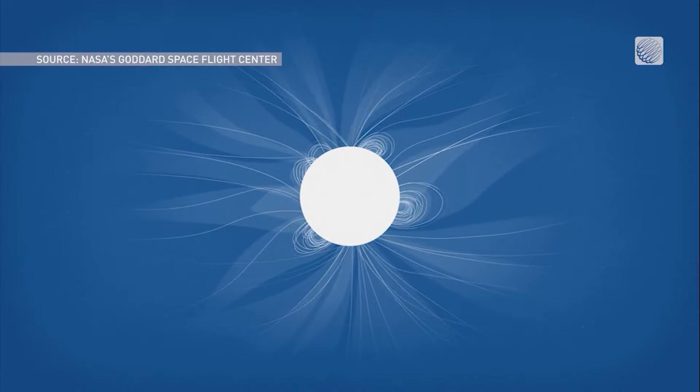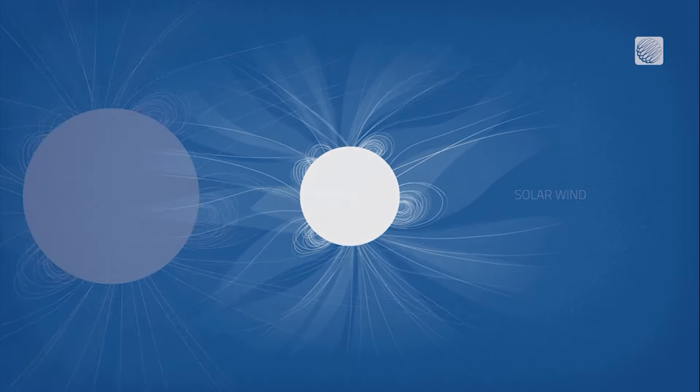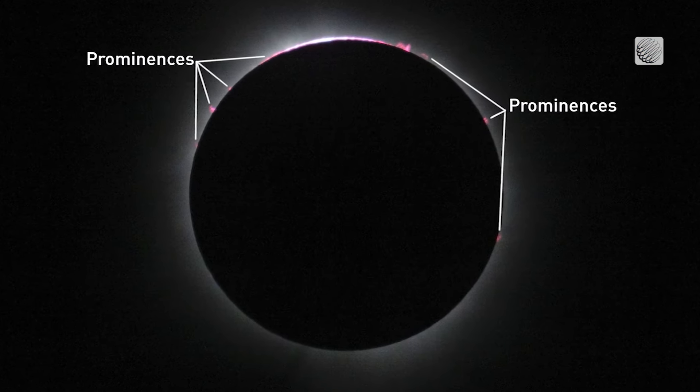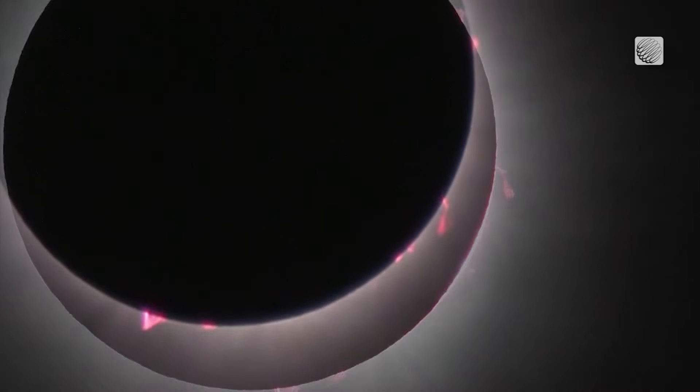Did our position in the solar cycle have an impact on the solar eclipse seen over North America? It did. Back in 2017, when the last one passed over America, we were near the end of solar cycle 24, so the sun was relatively quiet. The corona was a little dimmer, with not quite as many streamers. But this time around we're so close to the maximum of solar cycle 25 that we saw a much more active corona — some prominences, including a really bright one towards the bottom of the sun, that we didn't see back then because the activity level was different.